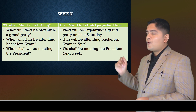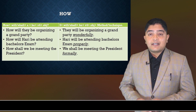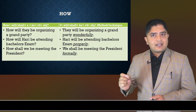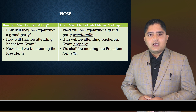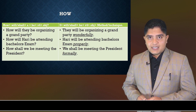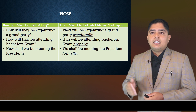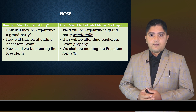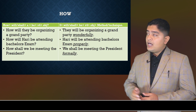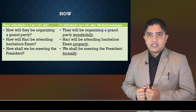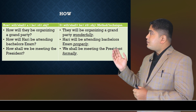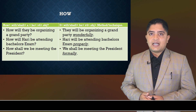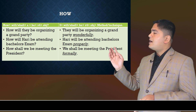Next is 'how.' Structure: How + will/shall + subject + be + verb(ing) + object? Answer: Subject + will/shall + be + verb(ing) + object + adverb/method. For example: 'How will they be organizing a grand party?' — 'They will be organizing a grand party wonderfully.' 'How will he be attending bachelor's examination?' — 'He will be attending bachelor's examination properly.' 'How shall we be meeting the president?' — 'We shall be meeting the president formally.'